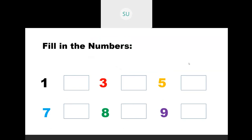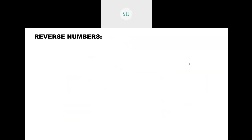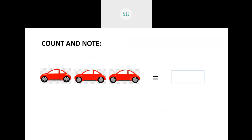Then reverse numbers — we saw how to read numbers in reverse order. Starting from 9, 8, 7, 6, 5, 4, 3, 2, and 1. So these are the reverse numbers.